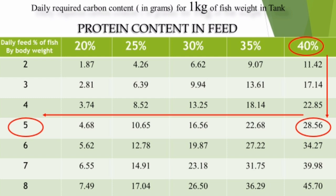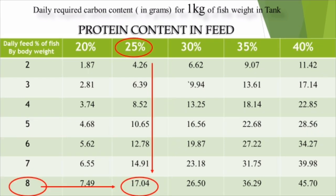Here is another example: if you are using 18 percent of the food with 25 percent protein, and you use 17.04, then for 1 kg you would use 3 kg of that value — calculated as 17 multiplied by 0.4 equals 300. This is a very easy calculation.